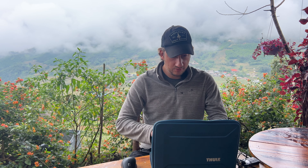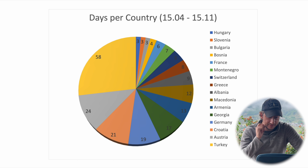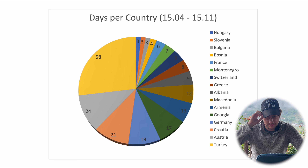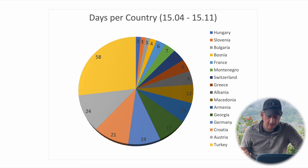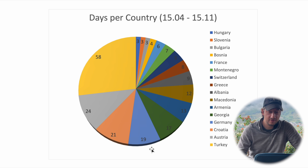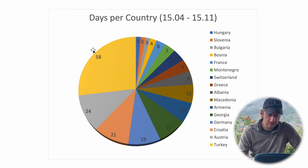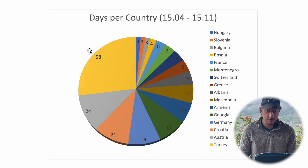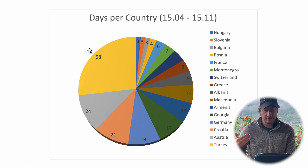We start with the overview of countries, sorted by number of days. Going top to bottom: medium-cost countries like Hungary, Slovenia, Bosnia, France, Macedonia, Armenia, Georgia, and then high-cost countries — 19 days in Germany, 21 days in Croatia, 24 days in Austria. A big portion was in Turkey because it's just really big — the most days I spent in any single country. That's important context, because it obviously affects the cost per country.